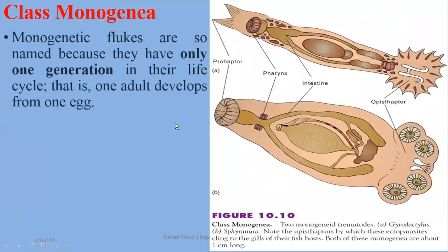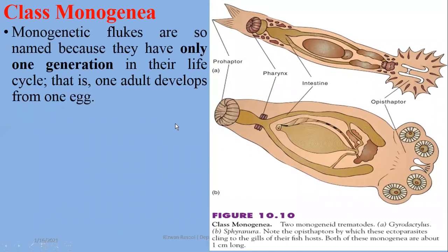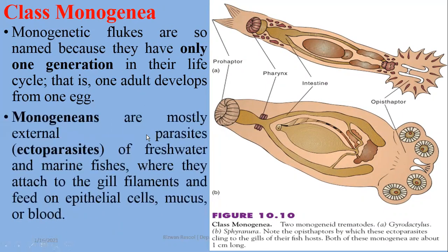We call them monogenetic flukes because they have only one generation in their life cycle — that is, one adult developed from one egg. Monogeneans are mostly external parasites, or ectoparasites, of freshwater and marine fishes, where they attach to the gill filaments and feed on epithelial cells, mucus, or blood of these fishes or aquatic organisms.